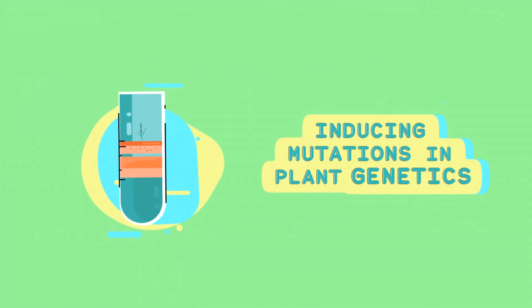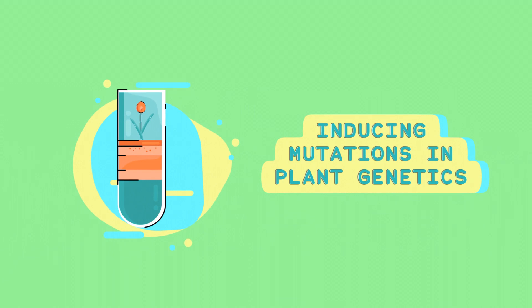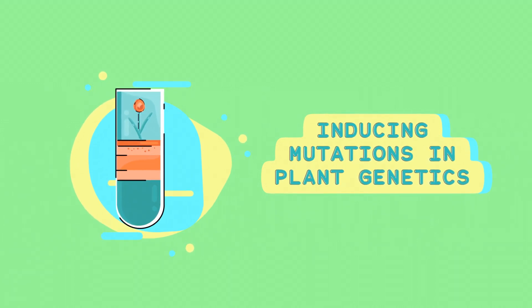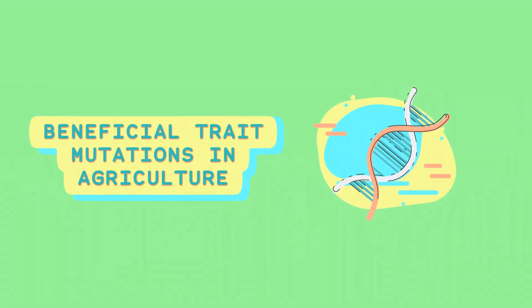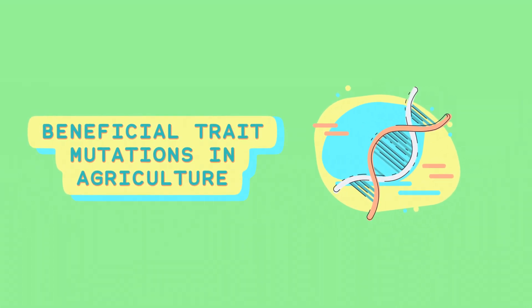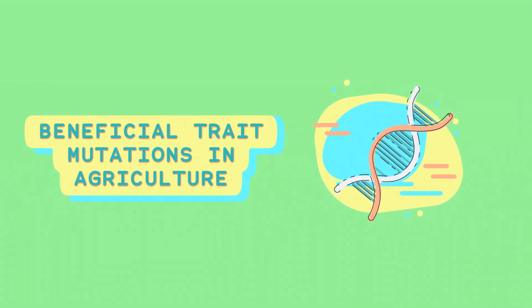Mutation breeding: exposing plants to radiation or chemicals can induce mutations in their genes. These mutations can sometimes create beneficial traits, such as resistance to pests or herbicides.